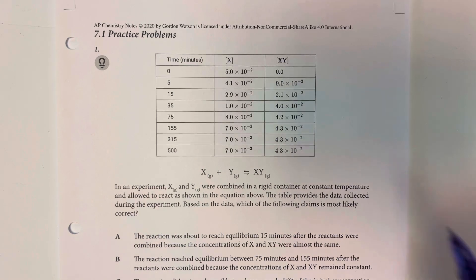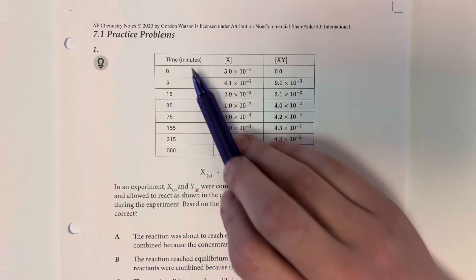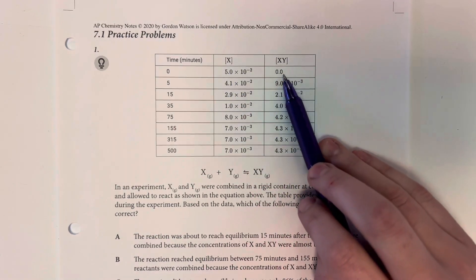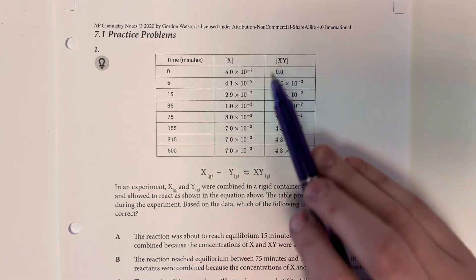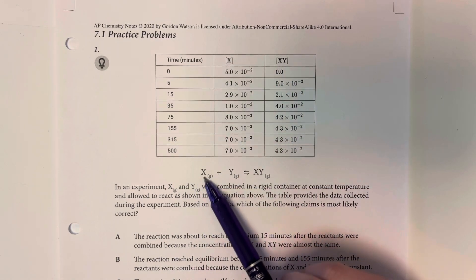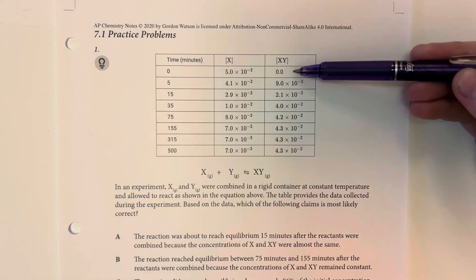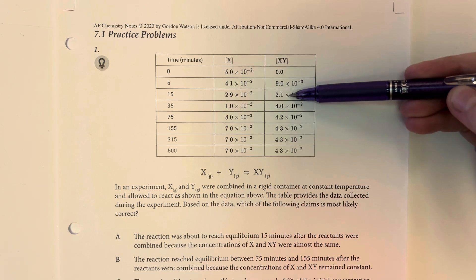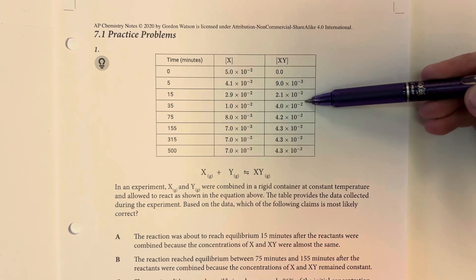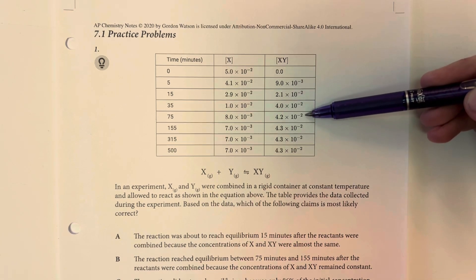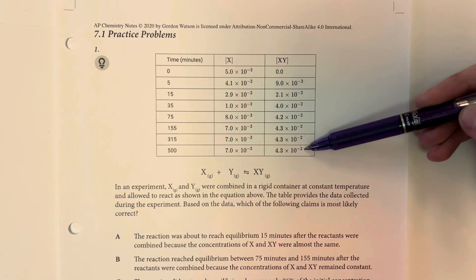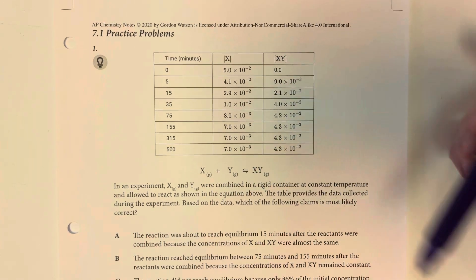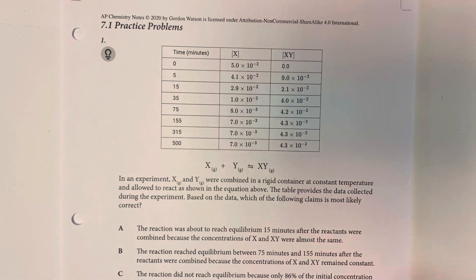Looking over this table, at time zero I had lots of compound X and none of compound XY, which makes sense since X is my reactant and XY is my product. Eventually I get slightly more of my product over time, and then I level out, as well as just the inverse for the concentration of my reactant X.